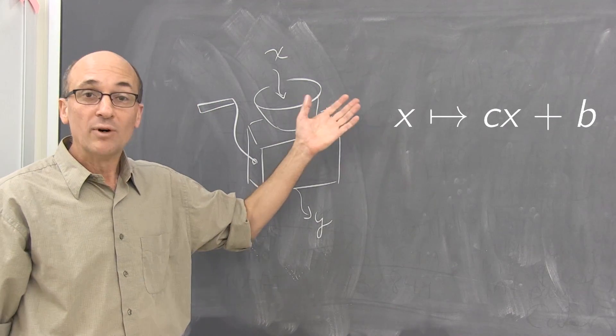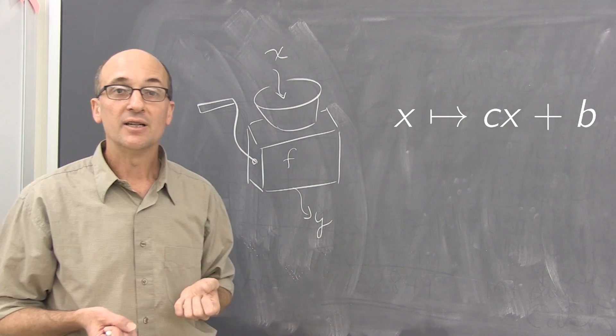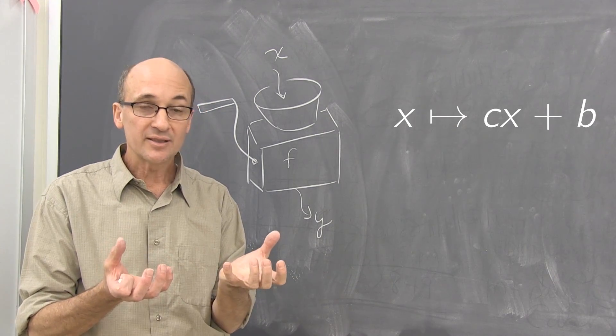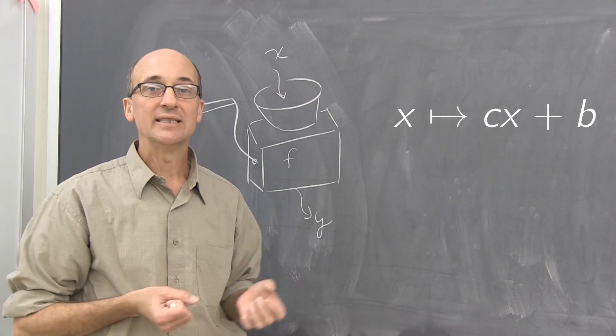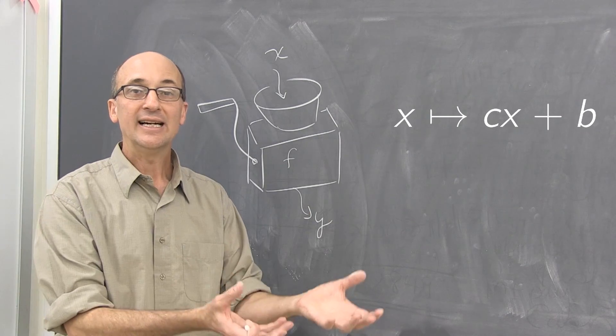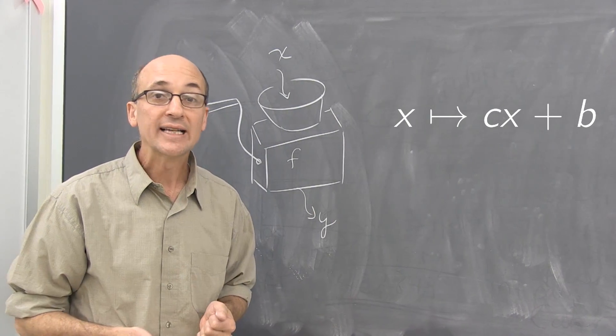One reason, one way to express why that first one is so simple is to look at what's involved. The two operations are simply multiplying by the constant c, and then followed by addition. Multiplication and addition. Those two operations make up what are called linear functions.